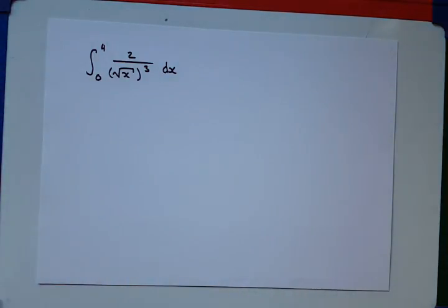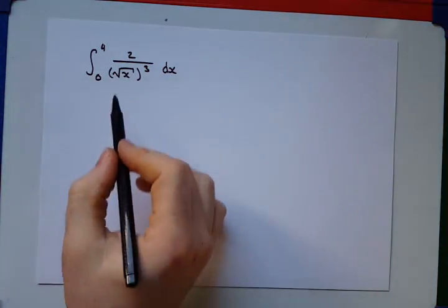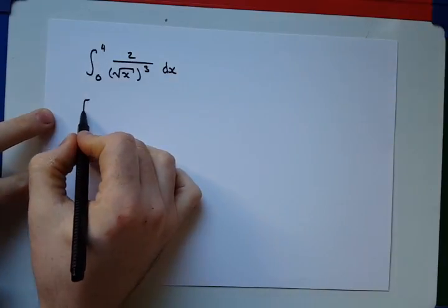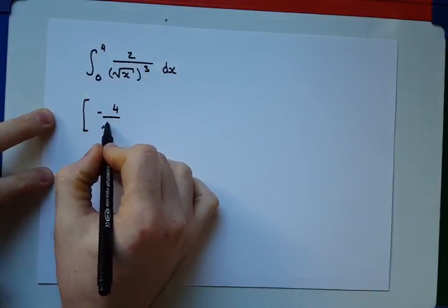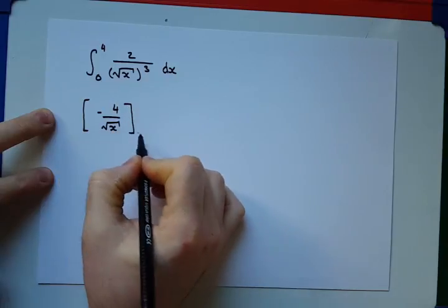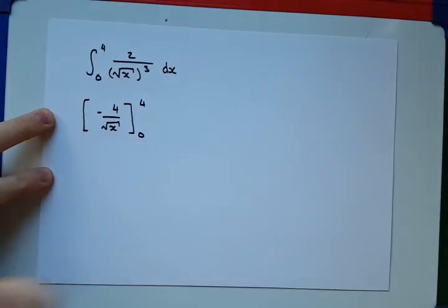Now, as I've said, we've covered integration before. Whenever we integrate this function between the limits of 0 and 4, you get negative 4 over the square root of x. And as I say, we're going between 0 and 4.